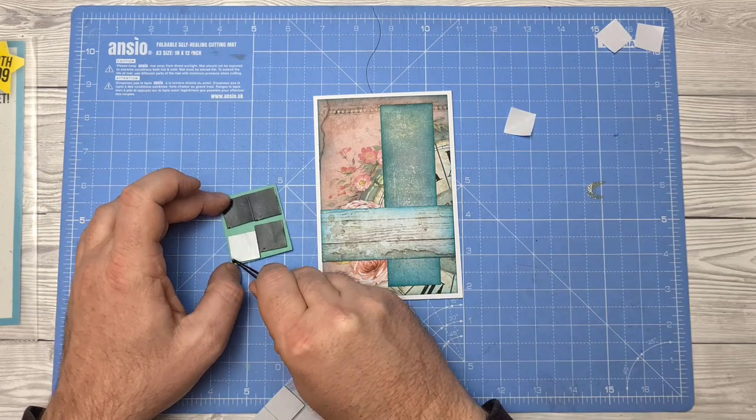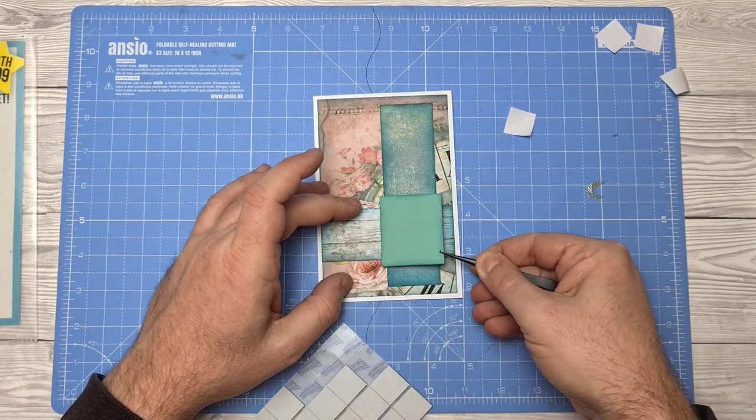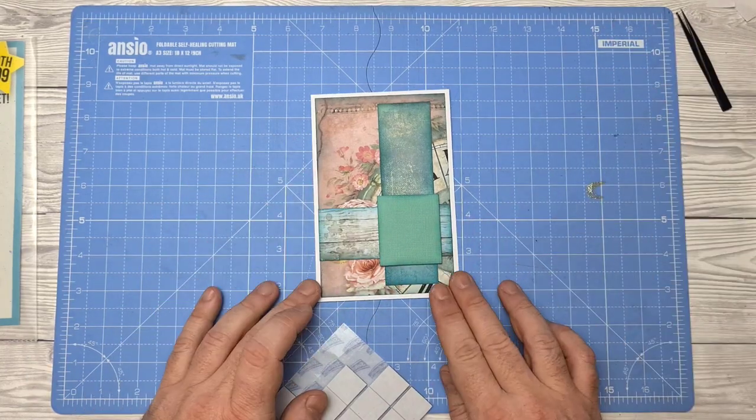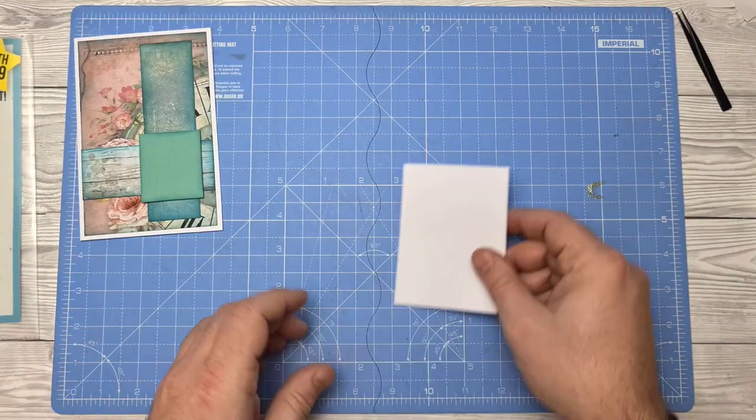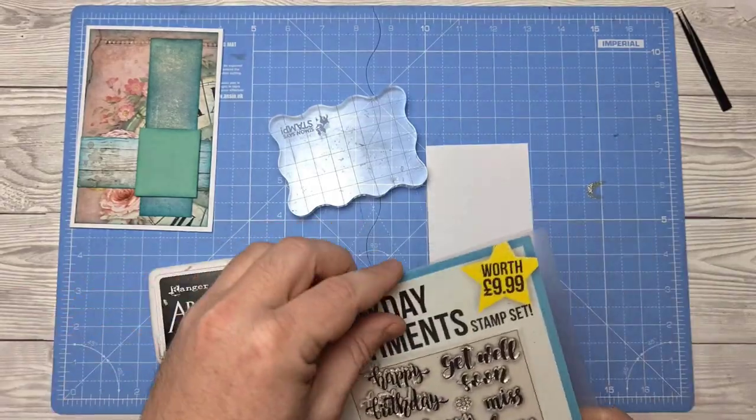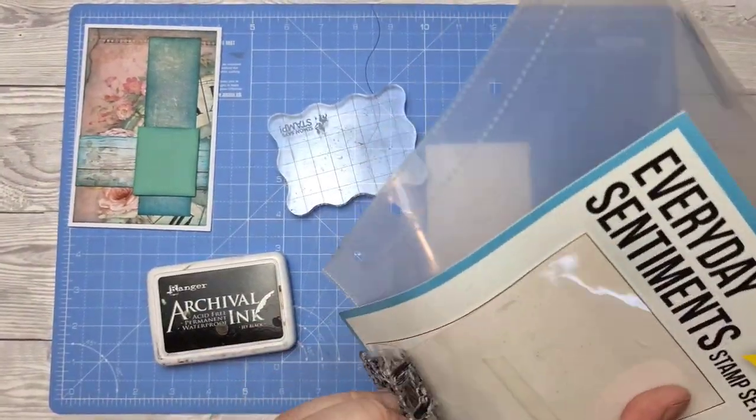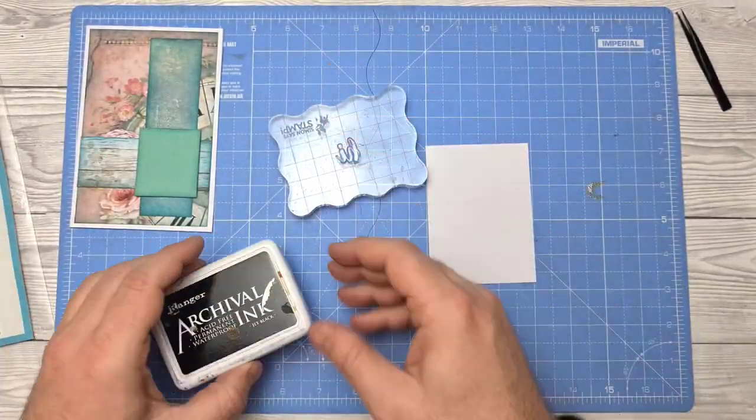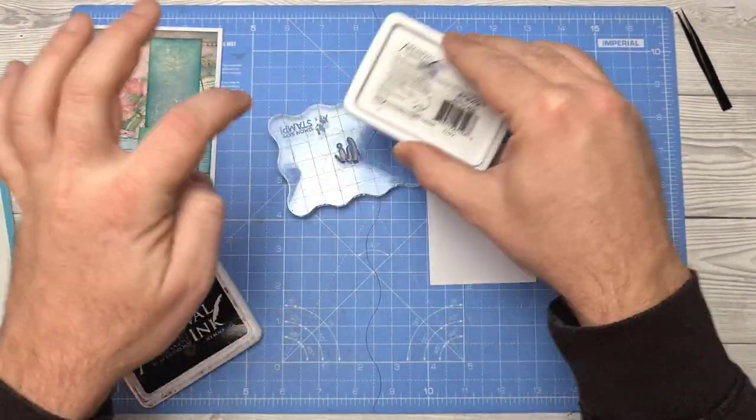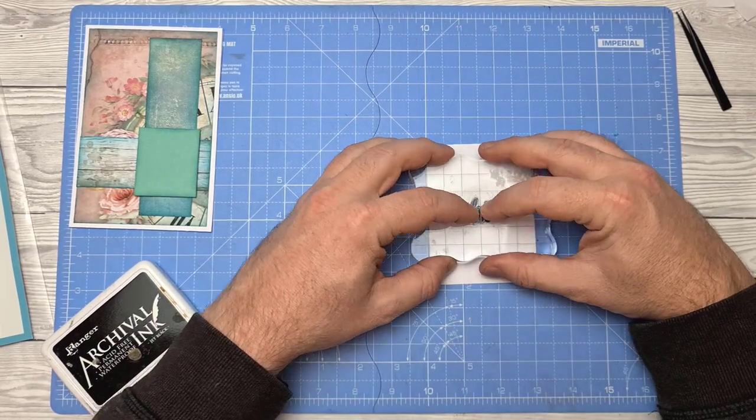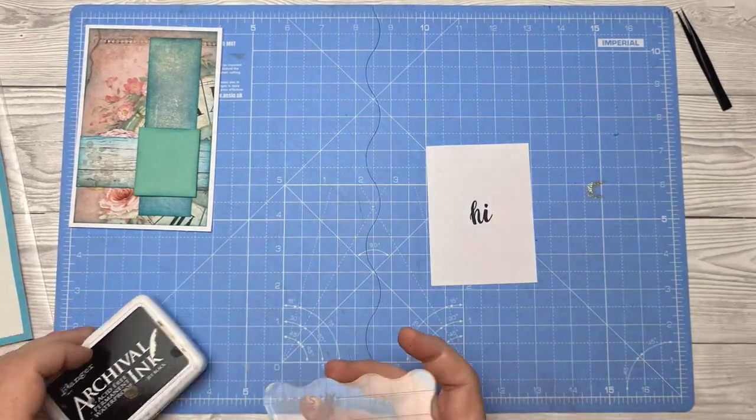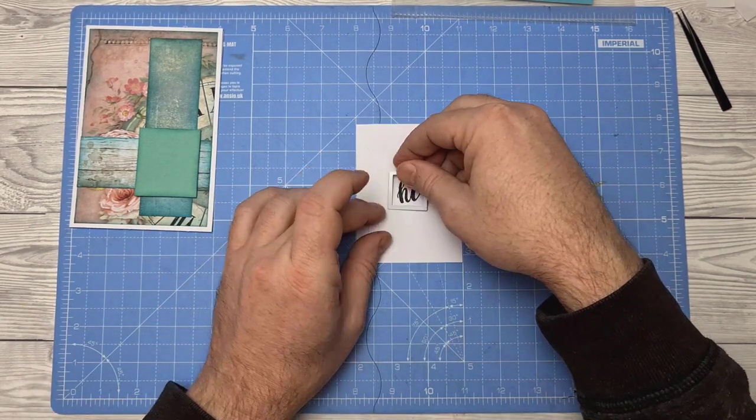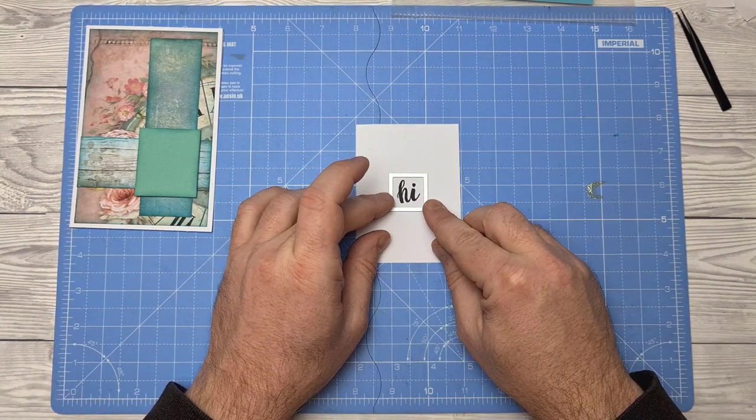I use the Sellotape Sticky Fixers as I find them the best foam pads. I wanted to add a little sentiment so I've just randomly picked something out from my stamp collection. These were actually a freebie from the cover of a magazine. But again, of course, you can use anything you've got in your stash. I probably overdid it with the size of white card there, but whatever.